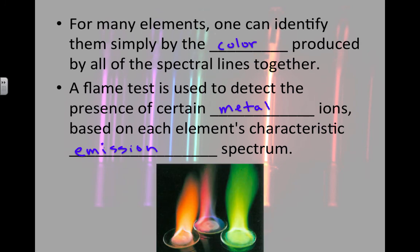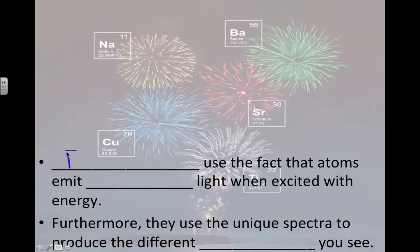Here's an example of what colors we might see during the flame test. Now fireworks utilize the fact that atoms emit visible light in specific colors when they're excited with energy. So if we can provide a little bit extra energy, we can get the colors we want if we use the right kind of atom. Furthermore, they use the unique spectra to produce all the different colors that we would see in a fireworks show.